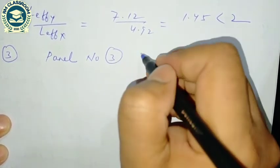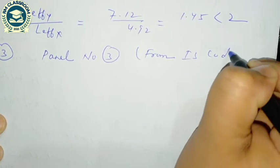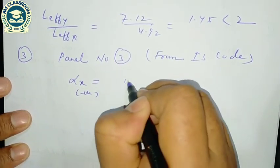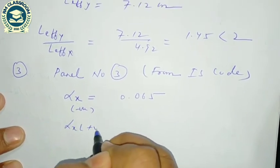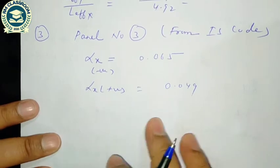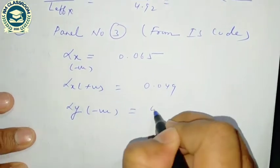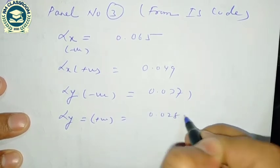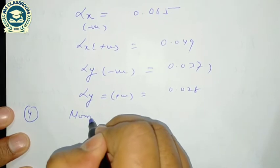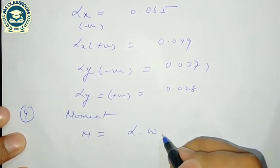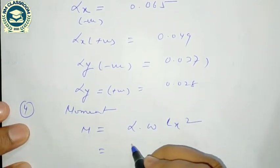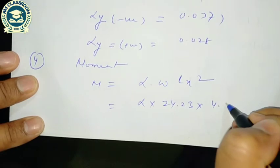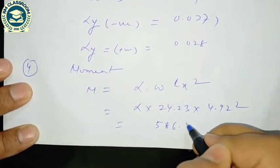The panel condition corresponds to panel number 3 in the IS code. From the IS code table, the bending moment coefficients are: α_x negative = 0.065, α_x positive = 0.049, α_y negative = 0.037, α_y positive = 0.028. The moment is calculated as M = α × w × Lx², giving a common factor of 24.23 × 4.92² = 586.5 × α.